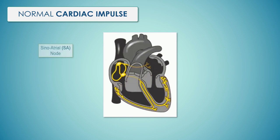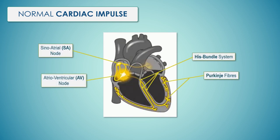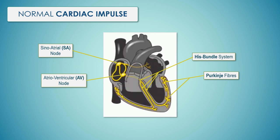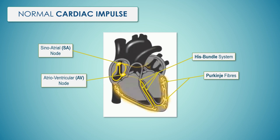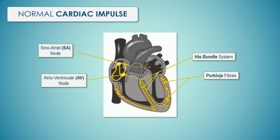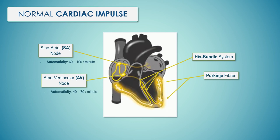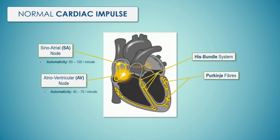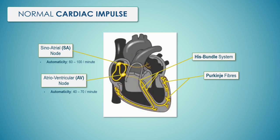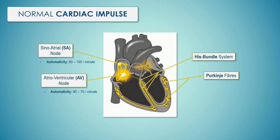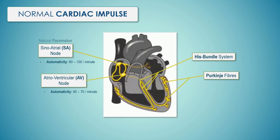The heart is a pump that receives and pumps blood from and to pulmonary and systemic circulations. Contraction of the heart chambers is coordinated by several regions composed of myocytes with specialized automaticity and conduction properties. Cells in the sinoatrial or SA node and atrioventricular or AV node have faster automaticity rates. In the SA node it is 60 to 100 beats per minute, and in the AV node it is 40 to 70 beats per minute, while the His bundle and Purkinje fibers are characterized by rapid rates of conduction.